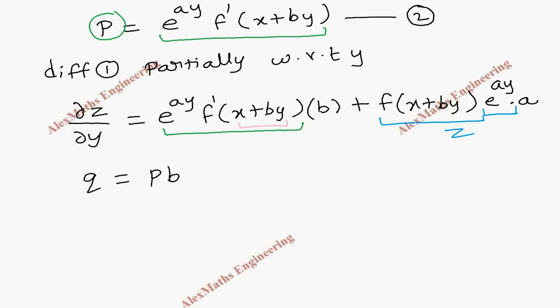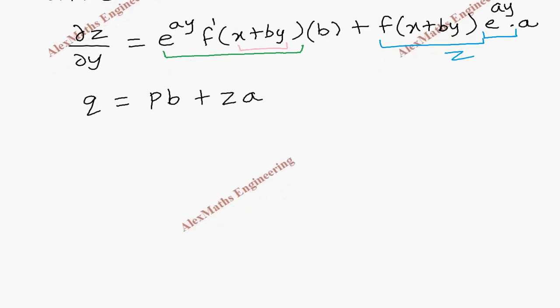This entire term is z, so we have z and remaining is a. Now we are going to rearrange this in the form of capital P small p plus capital Q small q equals capital R.